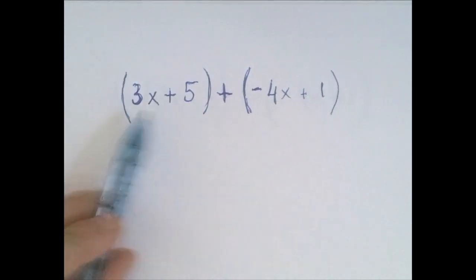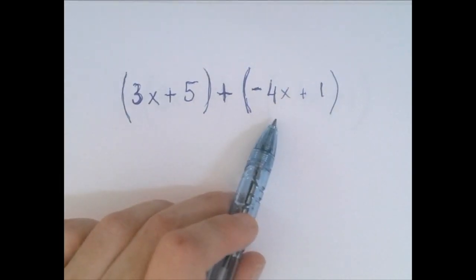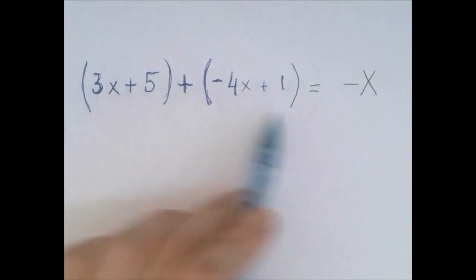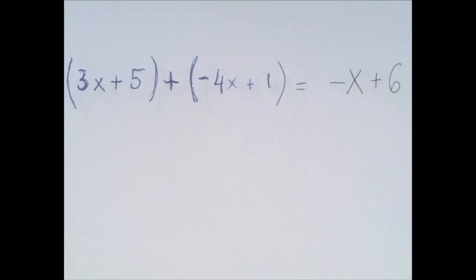If we combine 3x and negative 4x, we get negative 1x or minus x. And if we combine 5 and 1, we get 6. So the answer is negative x plus 6.